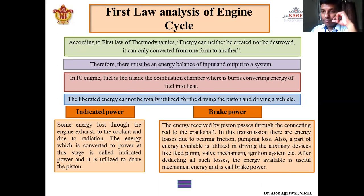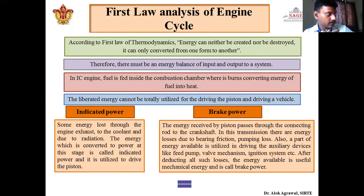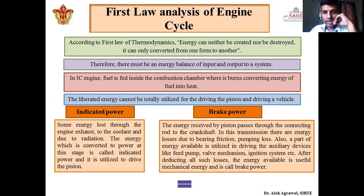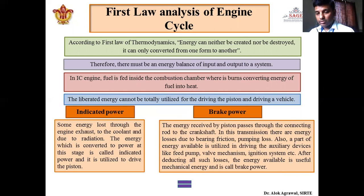Only a part of energy is utilized at the end. There is also certain energy utilized for driving auxiliary devices like the fuel pump, valve mechanism, and ignition system. After deducting all these losses, the mechanical energy available as output is called brake power. The energy lost in friction — the energy lost in converting the energy taken by the piston to the output power — is called friction power.